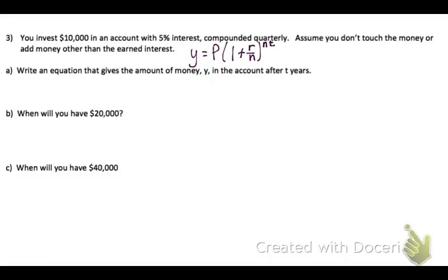So we're going to leave Y and T in the equation. P is our starting amount, so we started with $10,000. One plus R. Make sure you change your rate to a decimal so it should be .05.